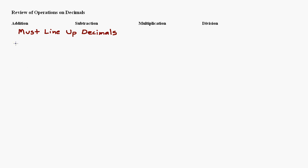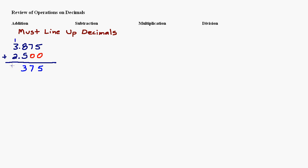For example, for adding, let's say we have 3.875 and we want to add that to 2.5. We line up the decimals — 2.5 and 3.875 — and if there are empty spaces you can put zeros in to hold the place. Then you add straight down: 5 plus 0, 7 plus 0, 8 plus 5 is 13 carry the 1, giving us 6. Bring the decimal straight down: the answer is 6.375.